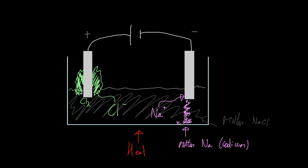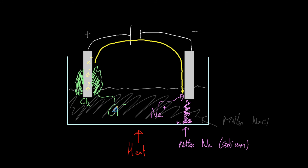The cycle continues. Electrons travel around the circuit into the negative electrode and end up in the sodium. This carries on as long as there are chloride ions to provide more electrons. Once the chloride ions run out, the current stops flowing because there are no more sources of electrons.